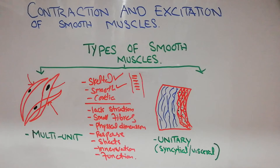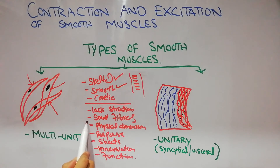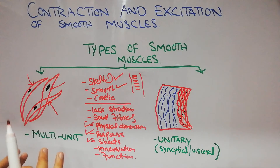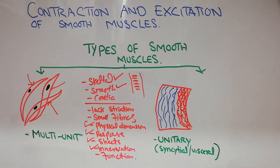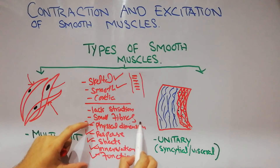Smooth muscles are present in different organs and viscera of the human body, like the intestine, blood vessels, human eye, and skin. The qualities which differentiate one type of smooth muscle from another are their physical dimensions, their response to stimuli, their presence in sheets or not, their innervation by nerve fibers, and finally their functions.